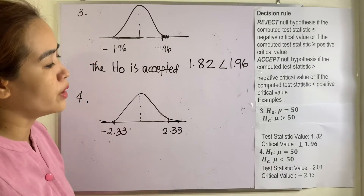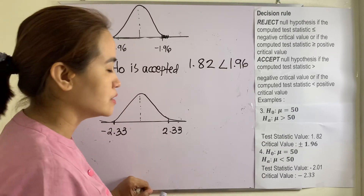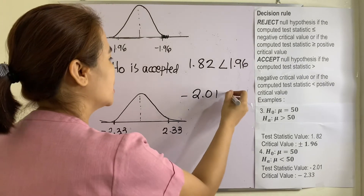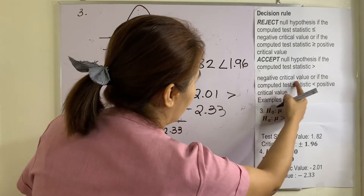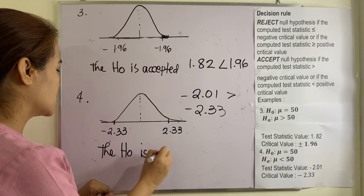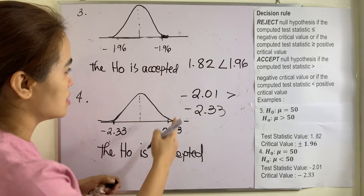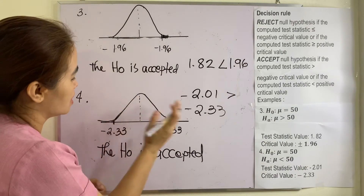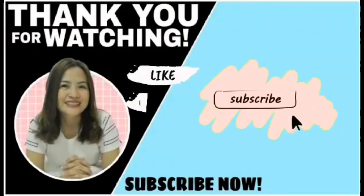Example 4: The null hypothesis is that the population mean is 50, and the alternative is that the population mean is less than 50. This is a one-tailed test. The test statistic is negative 2.01. Comparing it to the critical value of negative 2.33: since negative 2.01 is greater than negative 2.33, the null hypothesis is accepted. The rejection region is the area to the left of negative 2.33.